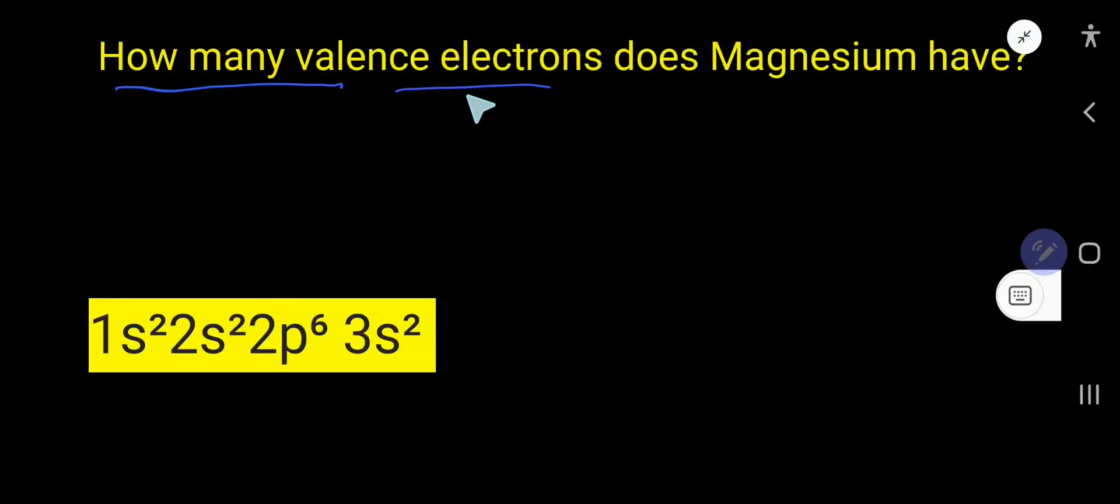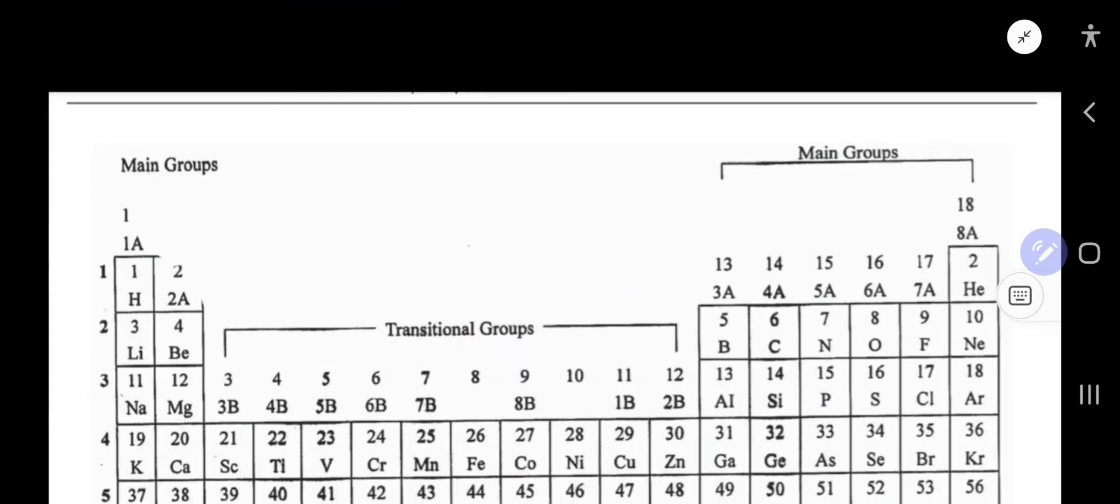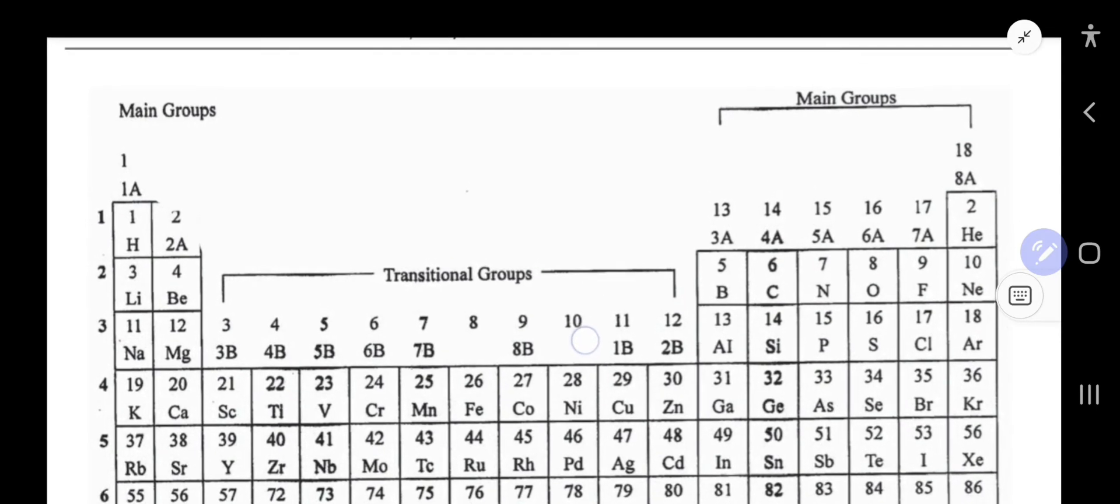How many valence electrons does magnesium have? The answer is magnesium has two valence electrons. I will show you two ways to find out the valence electrons for magnesium. Let me show you the first way.